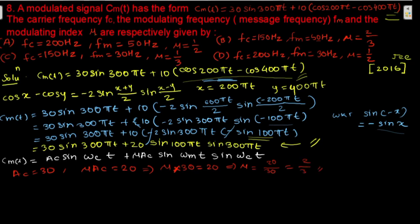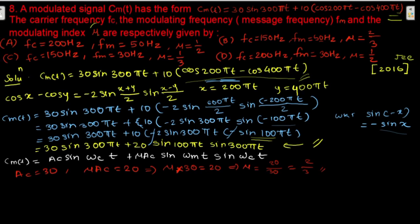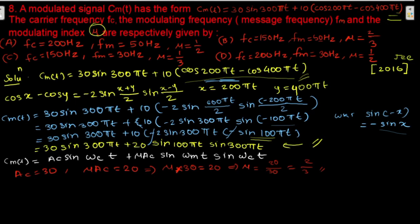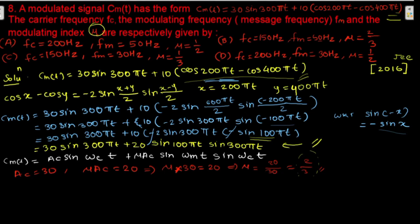Since μ·Ac = 20 and Ac = 30, we get μ × 30 = 20, which implies μ = 20/30 = 2/3. So the modulation index is 2/3.